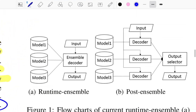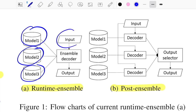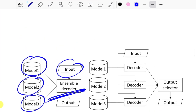Looking at the figure, there are two kinds of ensembles popular in summarization and text generation. In runtime ensemble, you have three models M1, M2, M3 with an input, and at every decoding time step in the ensemble decoder, you either average out the probabilities from each model or take a geometric mean of the probabilities generated by all models at that step.